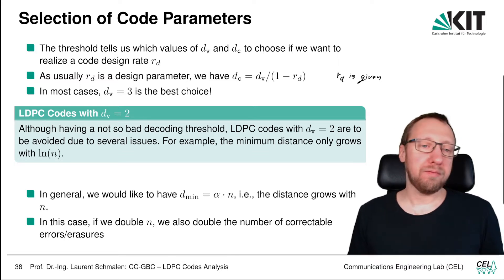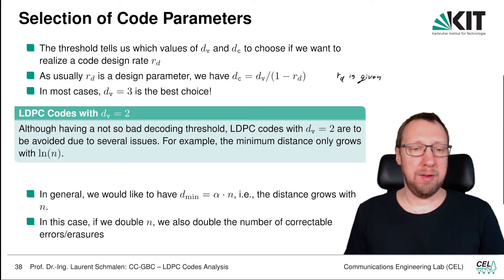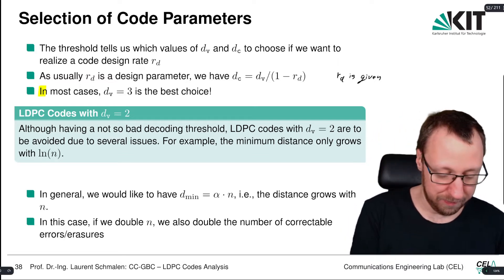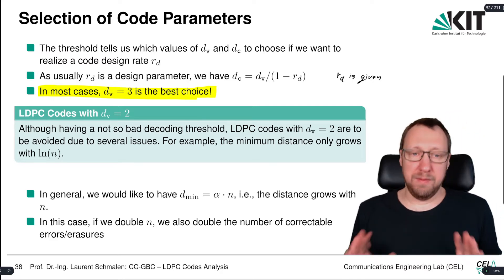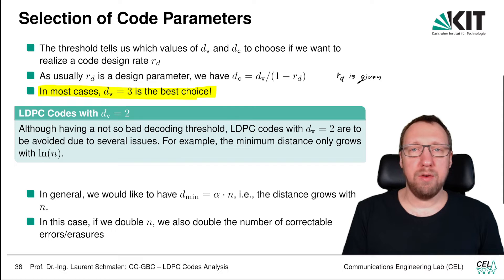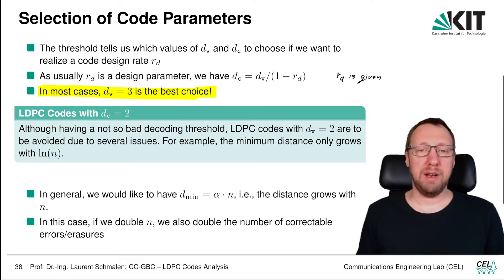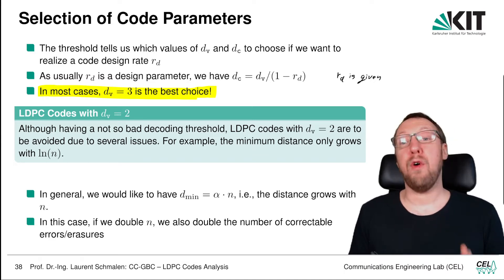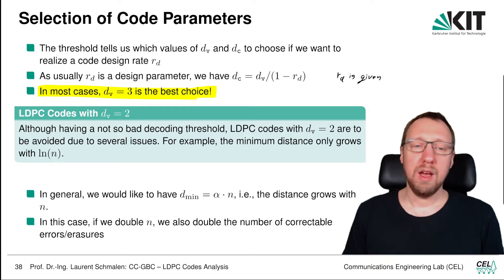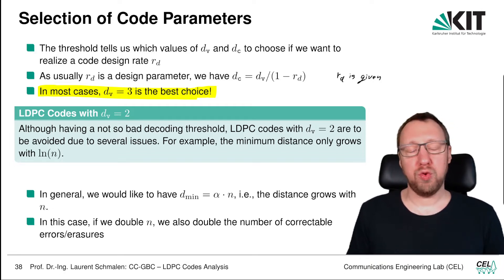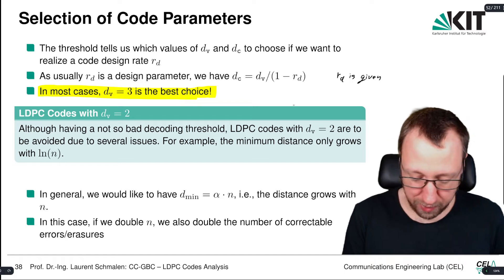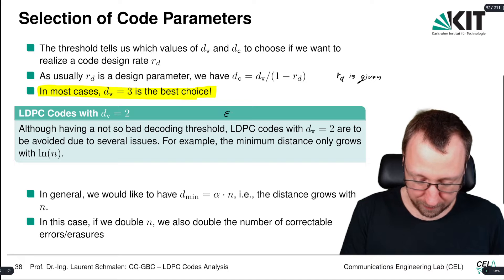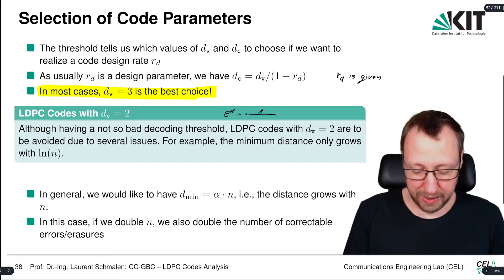In most cases, a variable node degree of three is the best choice, particularly if you have a regular code. For some other channels this may not be the case — this is true for the binary erasure channel. We saw in a simulation example in the previous chapter that on the binary symmetric channel there was one code where dv equals four was essentially optimal. The threshold for variable node degree of two, epsilon star, is one divided by dc minus one.